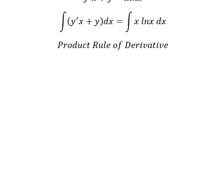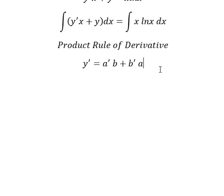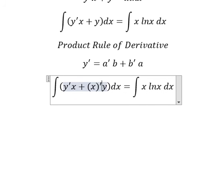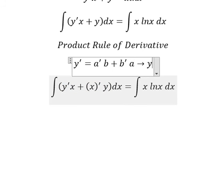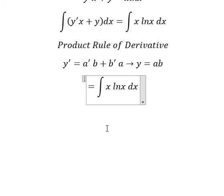We can apply the product rule of differentiation: the first derivative of y equals the first derivative of a multiplied by b, plus the first derivative of b multiplied by a. So integrating gives us y equals a·b, and the left side becomes s·y.